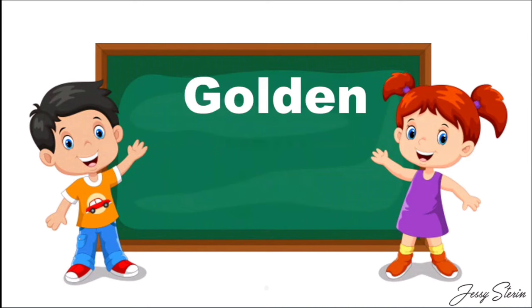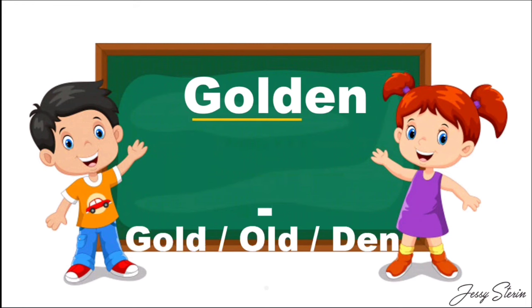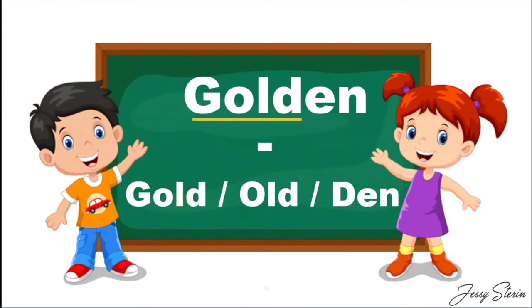Next is 'golden', G-O-L-D-E-N. Again, here you can write three options: 'gold', 'den', and 'old'. Isn't it interesting, children?